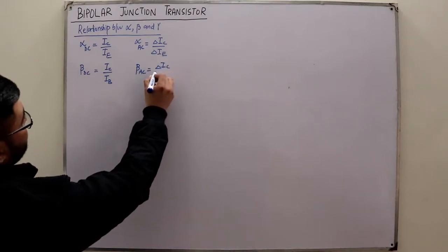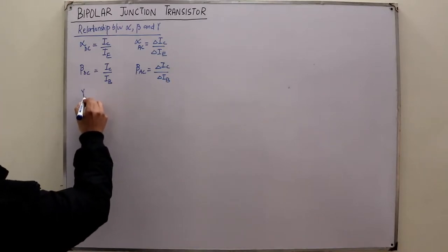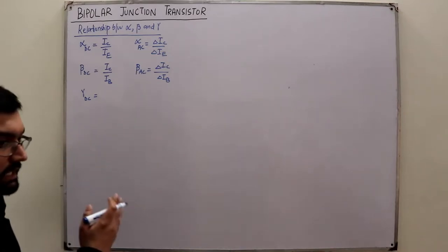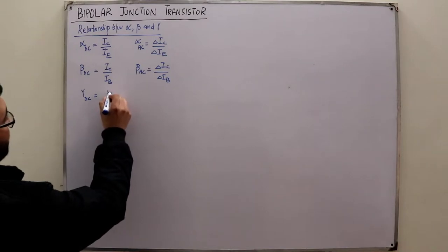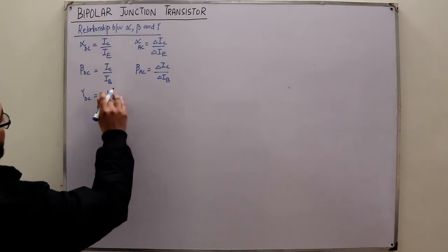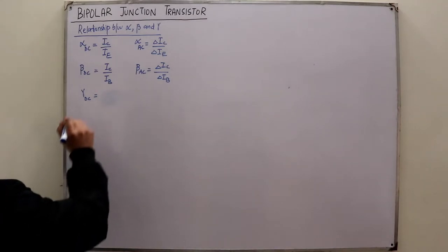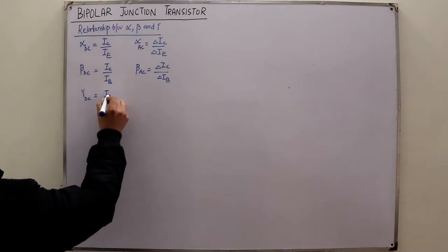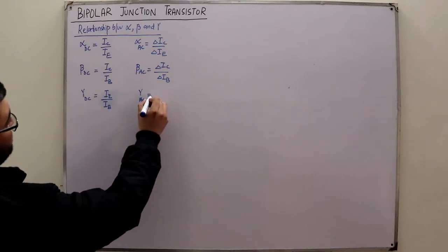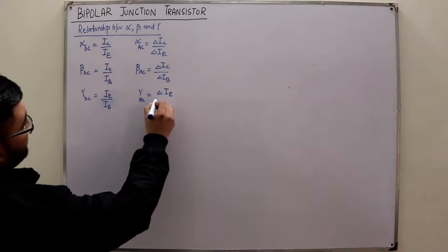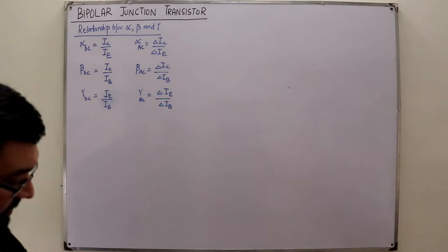Beta AC equals the change of IC divided by the change of IB. Then we have gamma. Gamma DC is for the common collector configuration: IE divided by IB. Gamma AC equals the change of IE divided by the change of IB. These are the current amplification factors for all three transistor configurations.